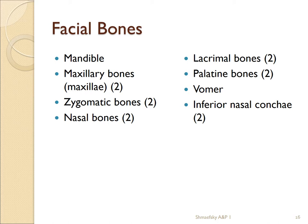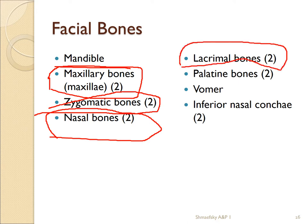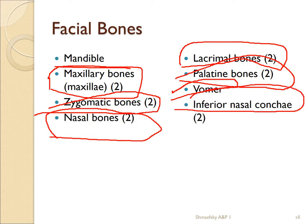Now we get to the facial bones. We have the mandible — the lower jaw — and two maxillae which are fused, with the fusion area called the mental symphysis, which is soft and flexible in children. We have the two zygomatic or cheekbones, connected to the zygomatic arch of the temporal bones. We have two small nasal bones, two lacrimal bones buried in the optic cavity, two palatine bones fused together located in the nasal cavity, and the vomer.